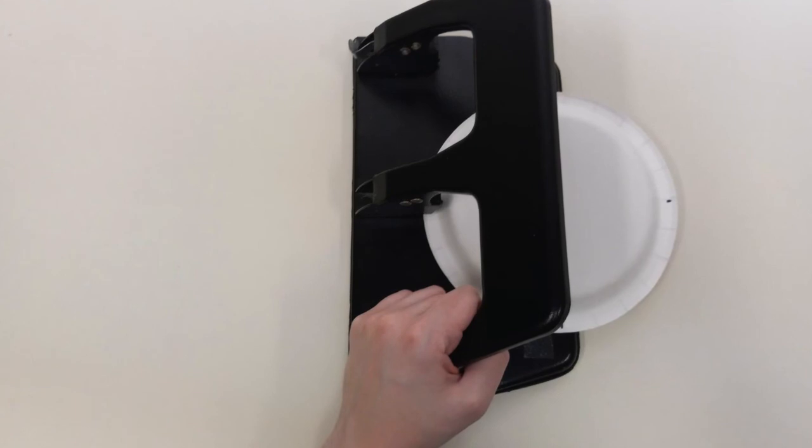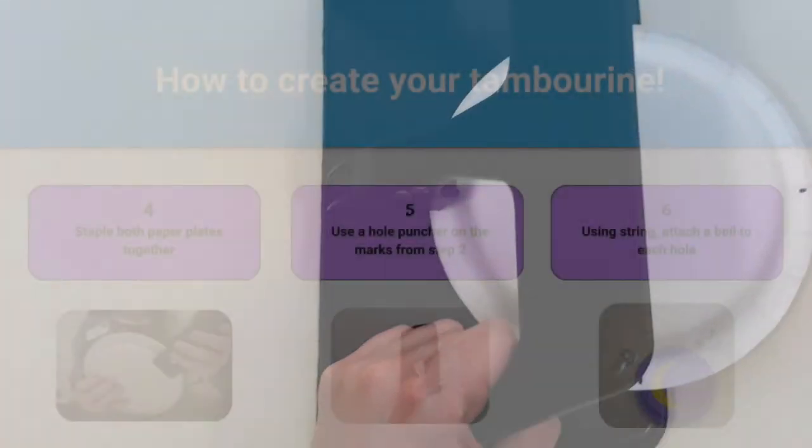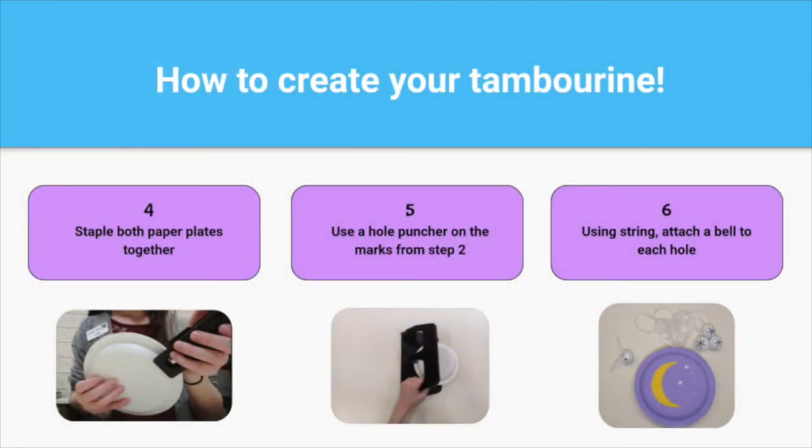Next, use the hole puncher on the marks from step 2. Using string, attach a bell to each hole.